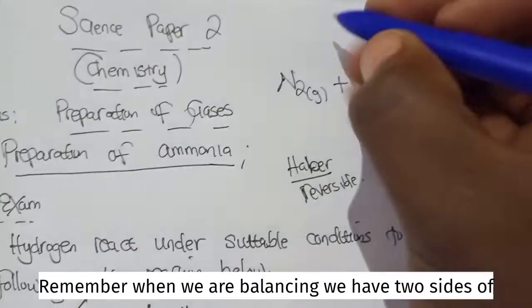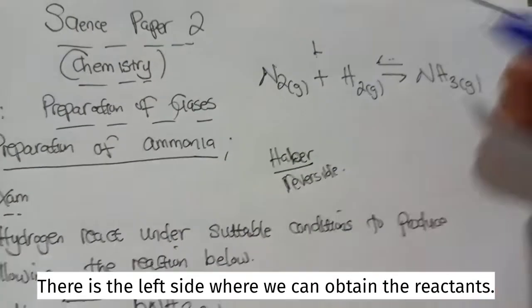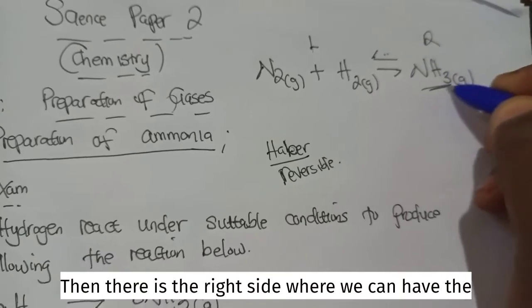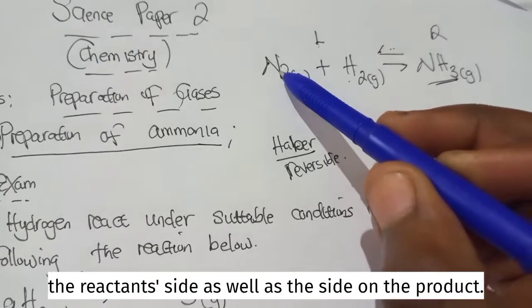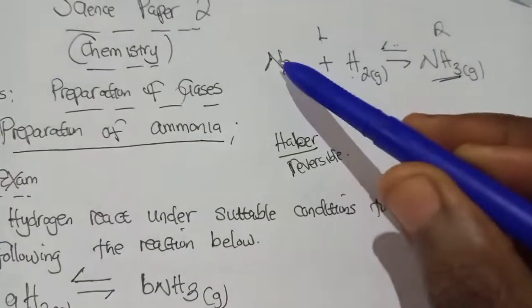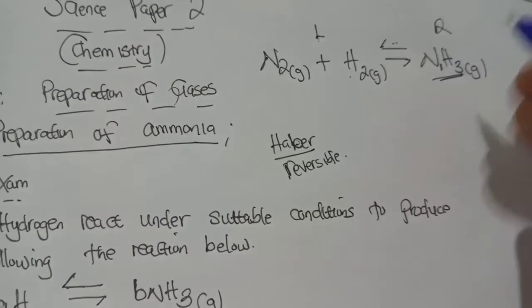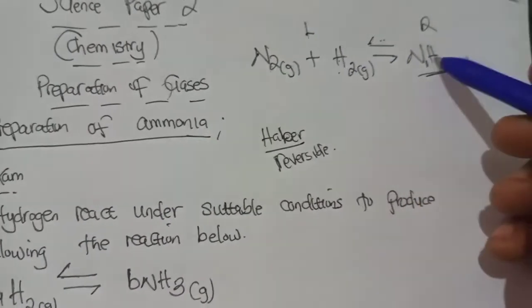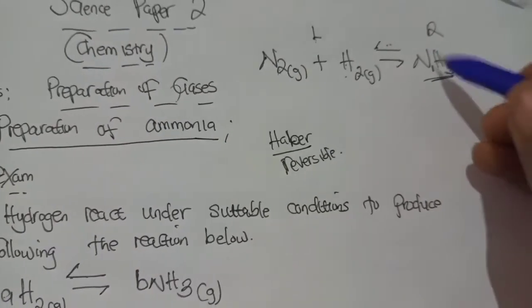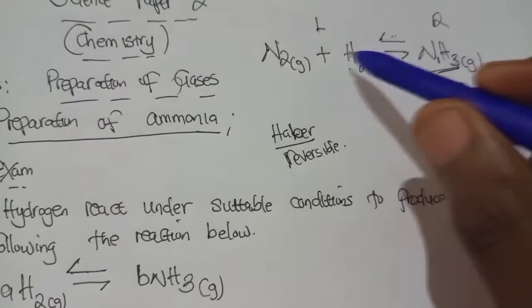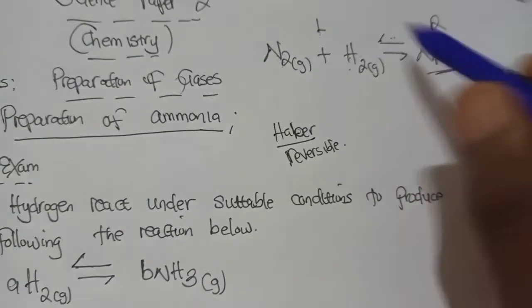So, the first thing is to write this equation, then we can try to balance. Remember, when we are balancing, we have two sides of the equation, there is the left side where we can obtain the reactants, then there is the right side where we can have the products. Each of the elements will have its appearance on the reactants side as well as on the products. Nitrogen on the left has two, nitrogen on the right has one. Hydrogen on the left has two, whilst hydrogen on the right has three. So, this means the equation is automatically unbalanced. To start balancing, it's best advisable, since nothing of these elements are matching, we should always start with the product.